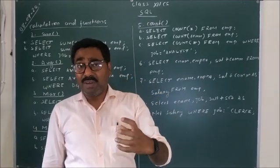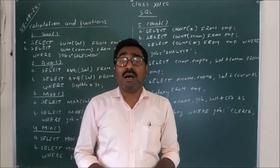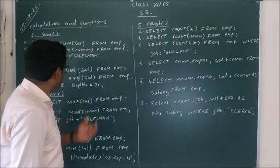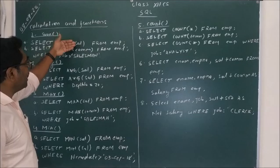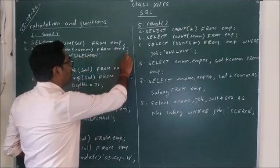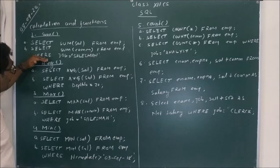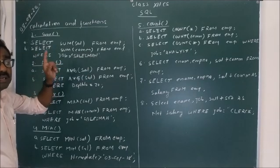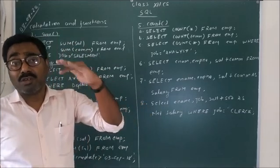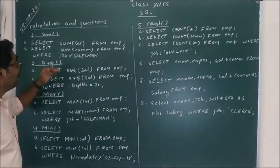Suppose we need the total value for some employees only — for example, the commission given to salesman only. In that case, we just add a WHERE condition: SELECT SUM(commission) FROM EMP WHERE job = 'salesman'; In whichever rows the job is salesman, the commission of all those salesmans will be added and the total will be displayed.